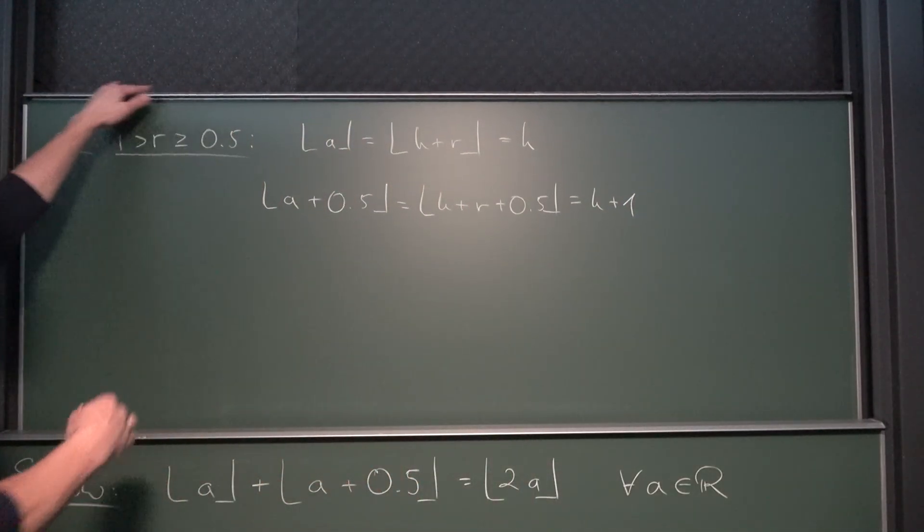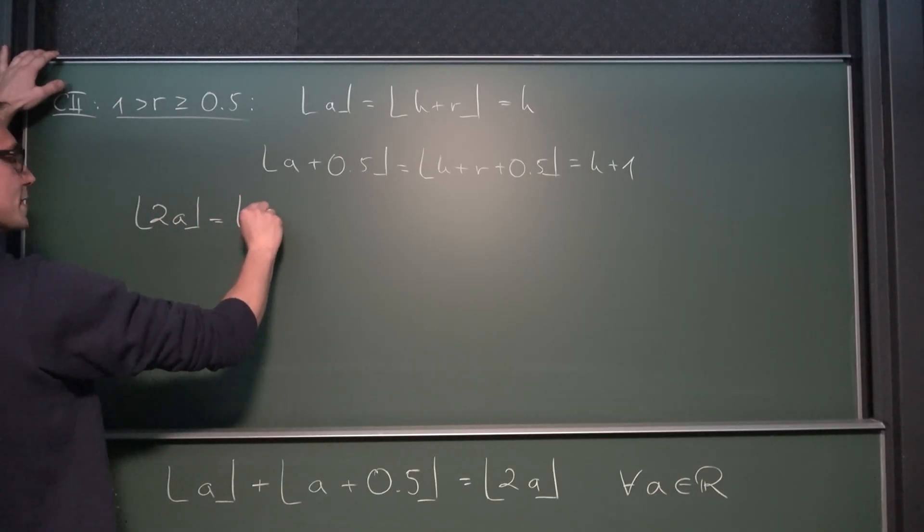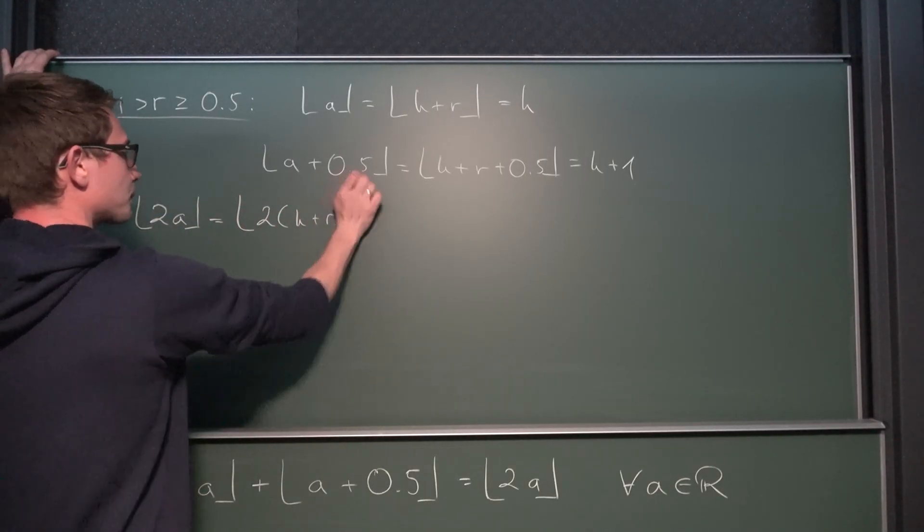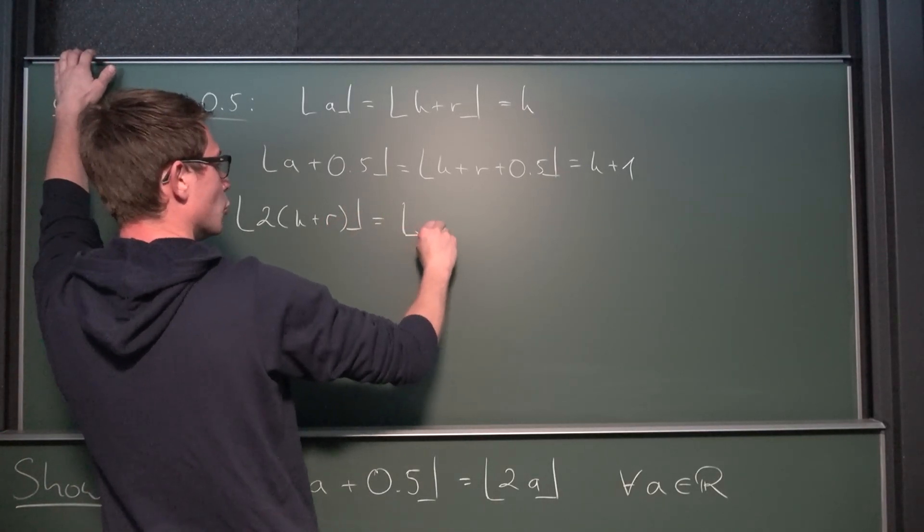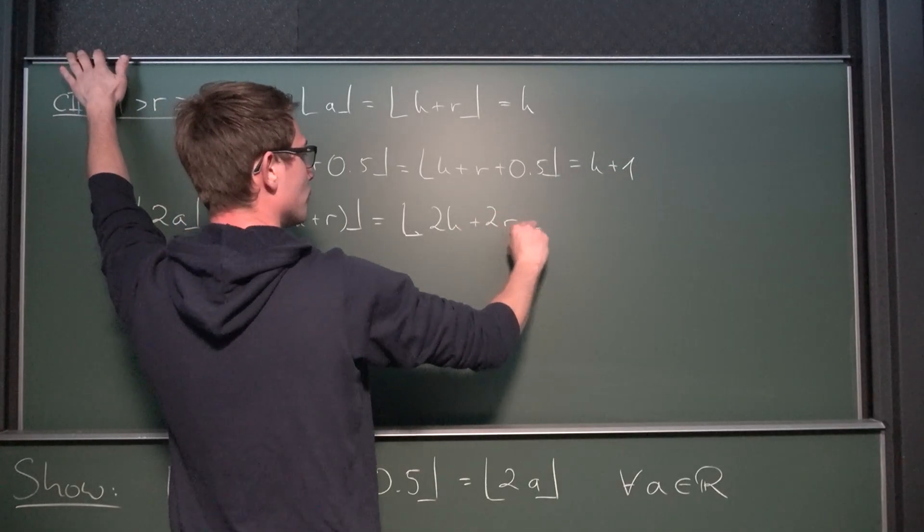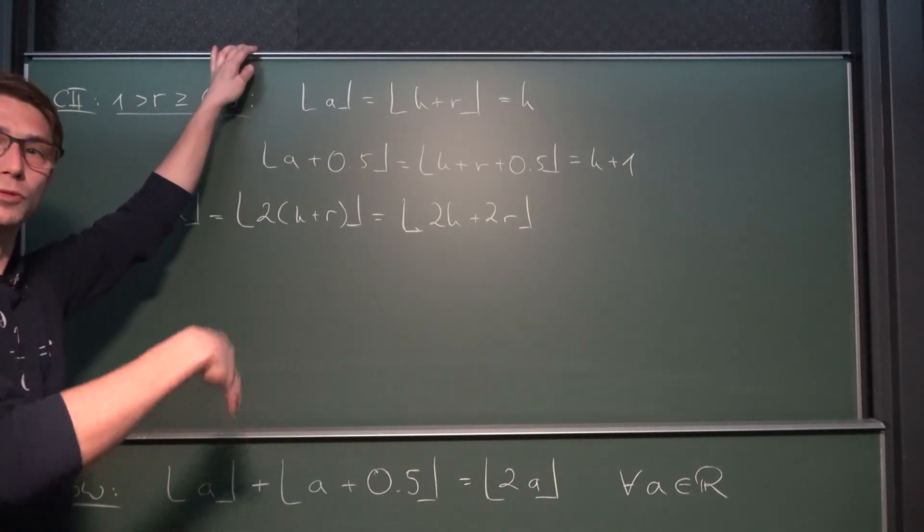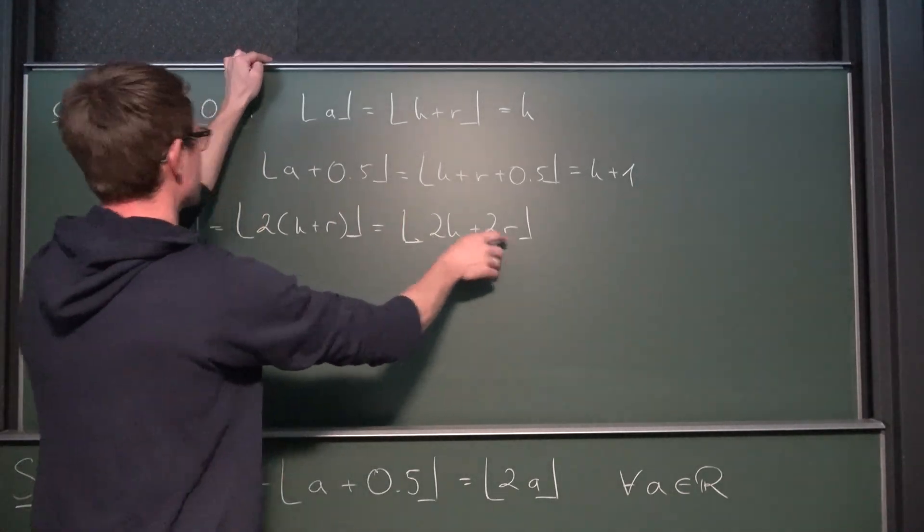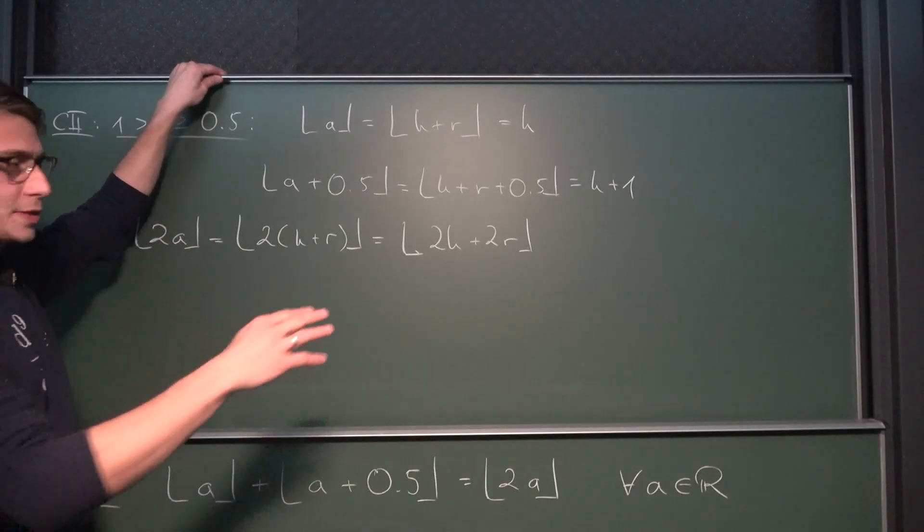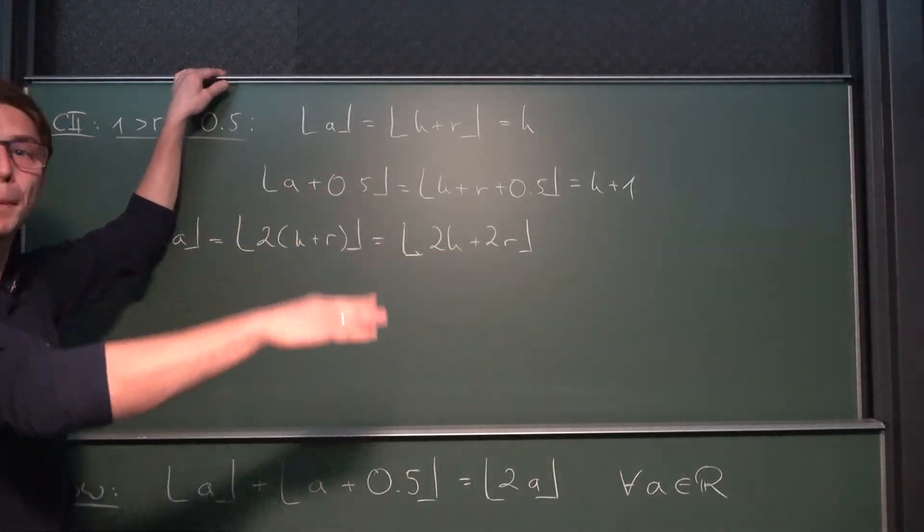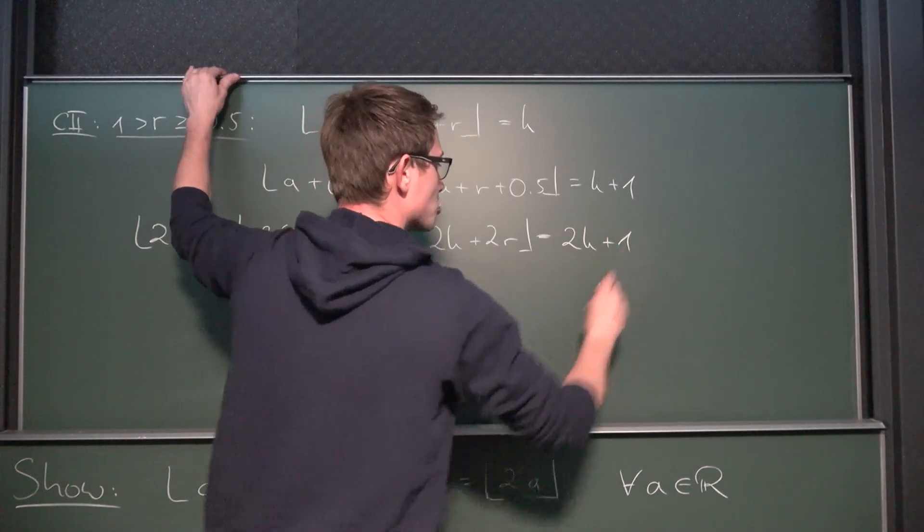Okay, and now for the right-hand side. What about 2 times A? 2 times A in this case is 2 times k plus r. Once again, as before, this is the same as the floor of 2k plus 2r. 2k, just the same as before, 2 times 3 would give us 6. But now, since r is greater than 0.5 or equal to 0.5, no matter what we do, we are always going to exceed 2 times k by 1. Meaning we are going to round down to 2k plus 1.